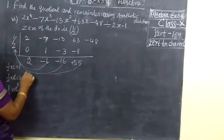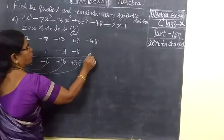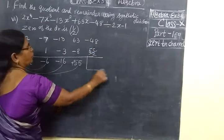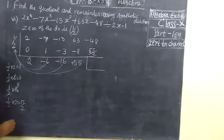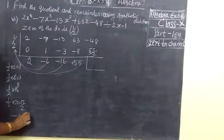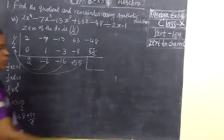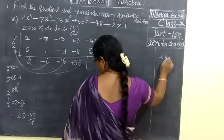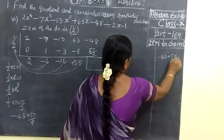Again, you multiply. So 1/2 into 55 equals 55/2. So here you write 55/2. Now you are going to get the remainder. This you simplify: minus 48 plus 55/2. First here, I write it here, minus 48.